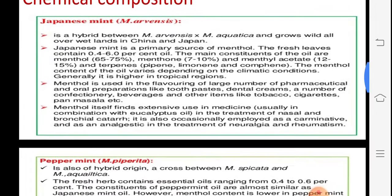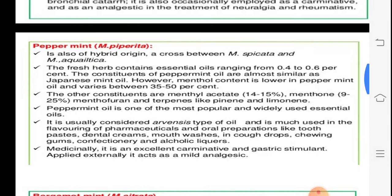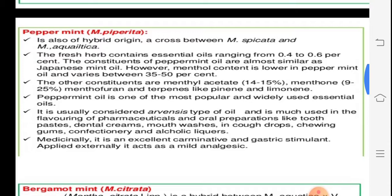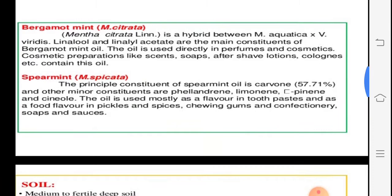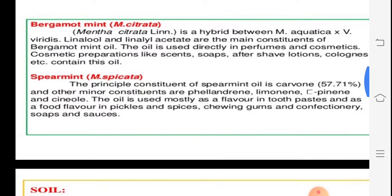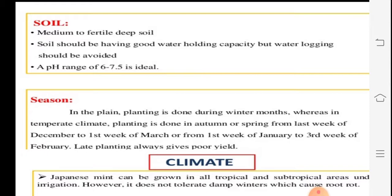Peppermint, Mentha piperita, has similar uses. It is a cross between Mentha spicata and Mentha aquatica, containing about 35–50% oil. Bergamot mint, Mentha citriodora, is a hybrid between Mentha aquatica and Mentha viridis. It is used in perfumes and cosmetics. For cultivation, a medium to fertile, deep soil with good water-holding capacity is required.